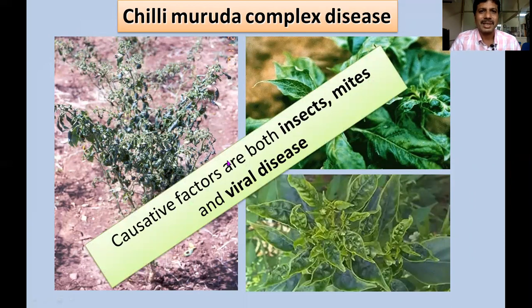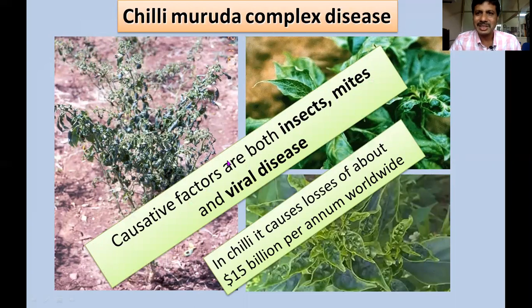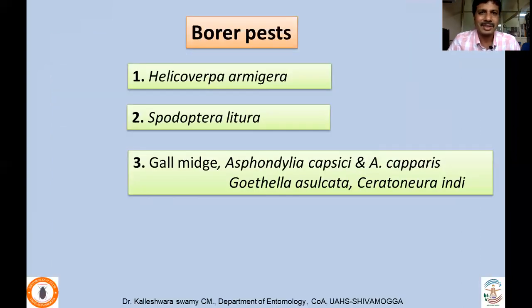The causative factors for Chili Murda complex disease are insects, mites, and viral diseases. Worldwide, losses are estimated at about 15 billion dollars. Borer pests — the polyphagous Helicoverpa armigera and Spodoptera litura — act as flower feeders and fruit borers, especially armigera. Gall midges have also become very problematic in recent times, infesting reproductive parts.